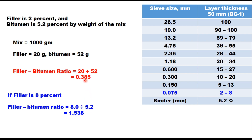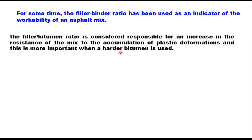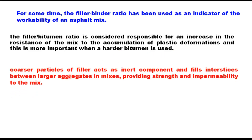Now, what is the significance of this? For some time, this filler-binder ratio has been used as an indicator of the workability of an asphalt mixture. But now it is considered responsible for an increase in resistance to the accumulation of plastic deformation, which is more important when a harder bitumen is used. Coarser particles of filler act as an inert component and fill the space between larger aggregates in mixes, providing strength and impermeability.